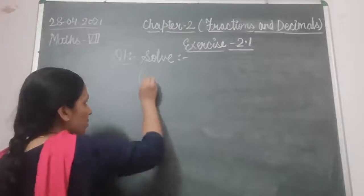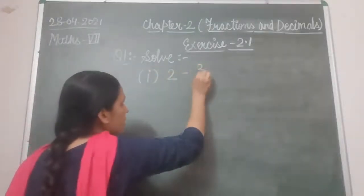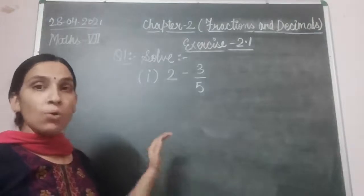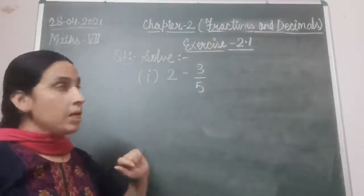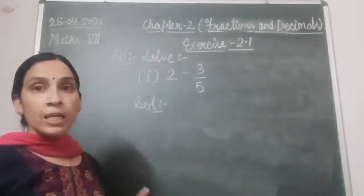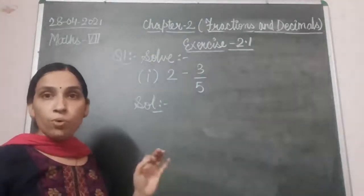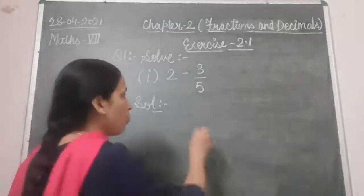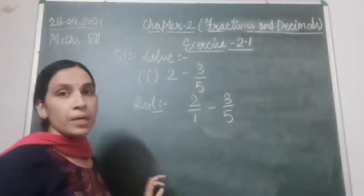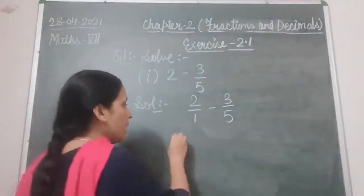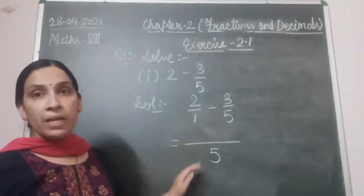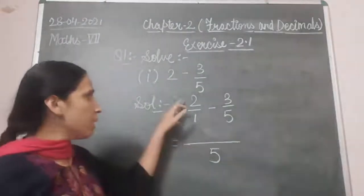Starting with the first part: 2 minus 3/5. Here 2 is a whole number. First, write 2 as 2/1. So it becomes 2/1 minus 3/5. Now find the LCM of 1 and 5, which is 5. The denominator 5 divides by 1, giving quotient 5, which is multiplied by the numerator: 5 twos are 10.